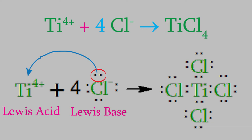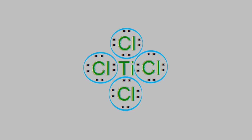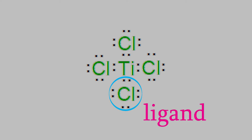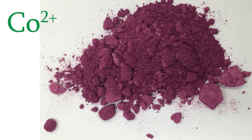Before we finish, let's take a closer look at the product in that reaction. Compounds like this, in which there's a metal ion that's a Lewis acid surrounded by Lewis bases, are actually very common in chemistry. If the Lewis base is bonded to a transition metal, the base is called a ligand. Compounds where a transition metal is bonded to a ligand often have beautiful colors. For example, here's a compound with nickel as the metal and a ligand called ethylenediamine as the Lewis base. And here's one with cobalt as the metal and ammonia as the ligand.